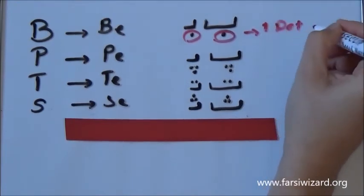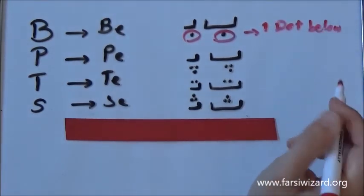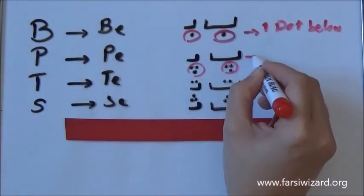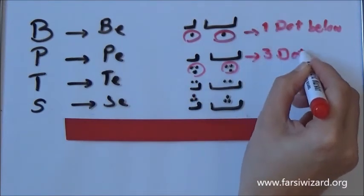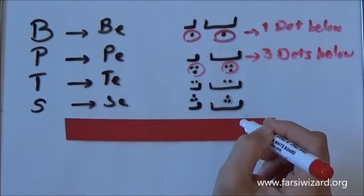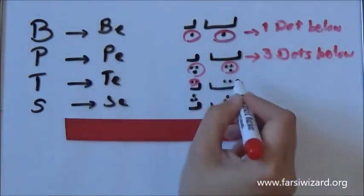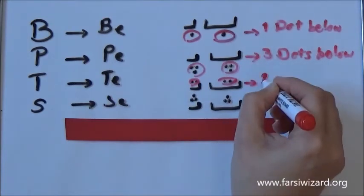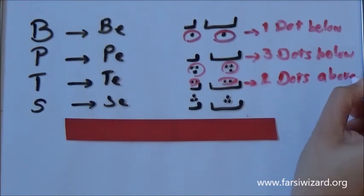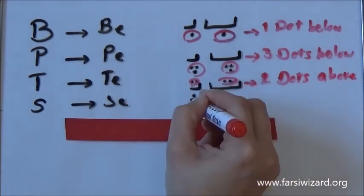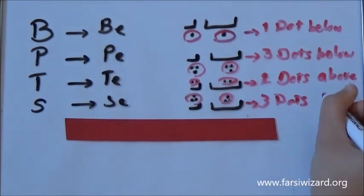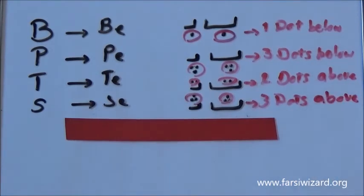How do we remember how each of these letters would be written? Pay very close attention to the number and the place of dots. With the letter B: one dot below — B below. With the letter P: three dots below. With the letter T: two dots above. And with the letter C: three dots above. So two letters have dots below, and two letters have dots above.